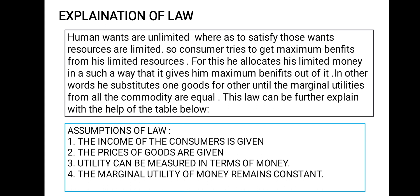Human wants are unlimited, whereas resources to satisfy those wants are limited. So the consumer tries to get maximum benefit from his limited resources. For this, he allocates his limited money in such a way that it gives him maximum benefit. In other words, he substitutes one good for another until the marginal utility from all the commodities are equal. This law can be further explained with the help of the table below.